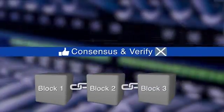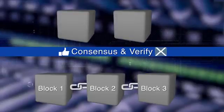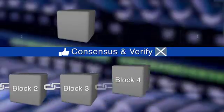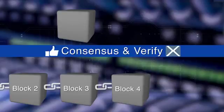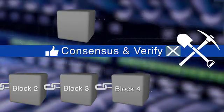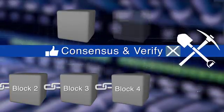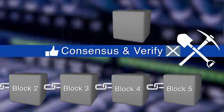Blocks go through a consensus process to select the next block that will be added to the chain. The chosen block is verified and added to the current chain. Validation and consensus processes are carried out by special peer nodes called miners — powerful computers executing software defined by the blockchain protocol.